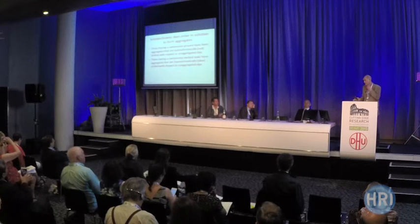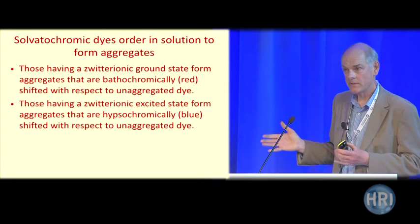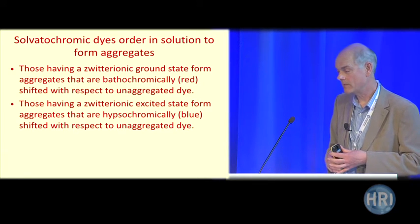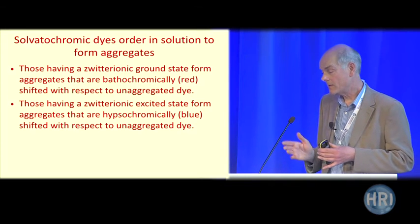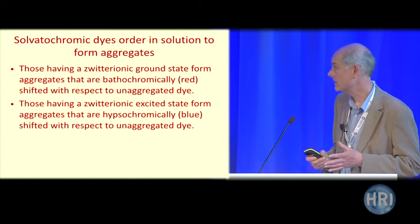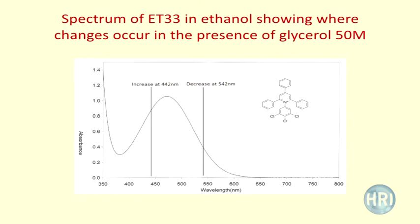Those dyes that are zwitterionic in the ground state form aggregates in solution — those aggregates are bathochromically or red-shifted with respect to un-aggregated dye. Those dyes having a zwitterionic excited state form aggregates that are blue-shifted with respect to un-aggregated dye. Looking at a spectrum of ET33, which is zwitterionic in the ground state, in the presence of potency there's a decrease at around 540 nanometres and an increase at 440 nanometres.